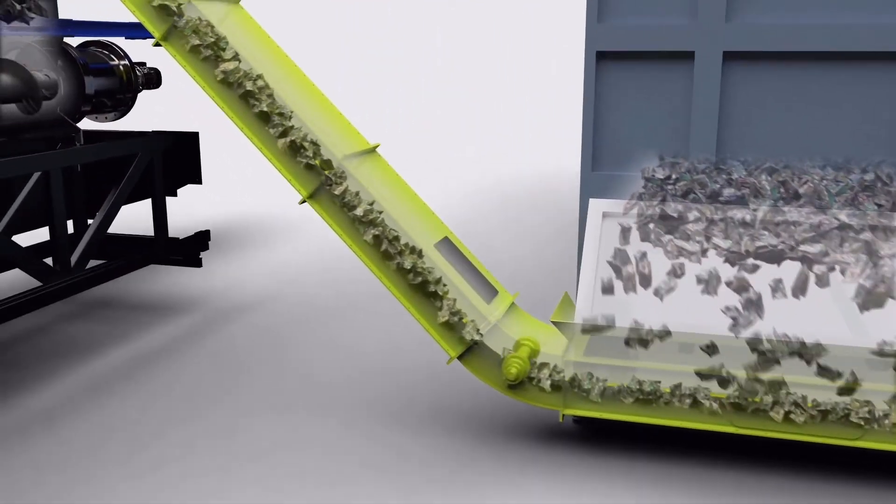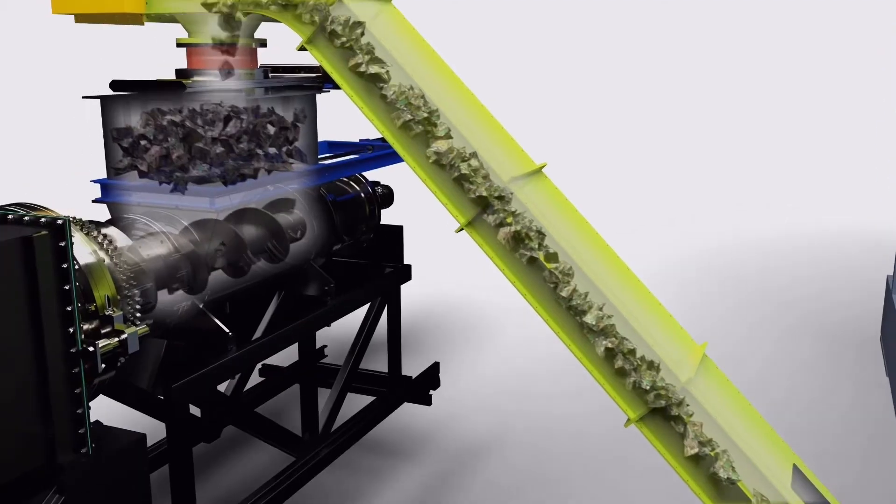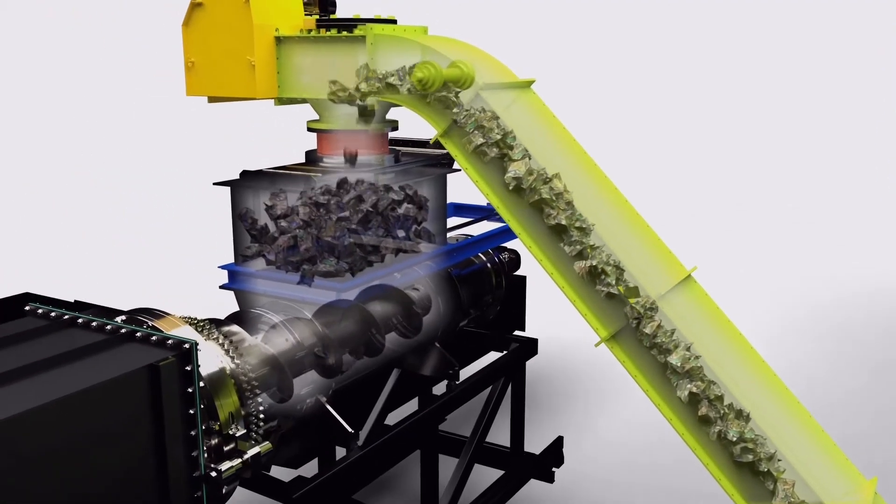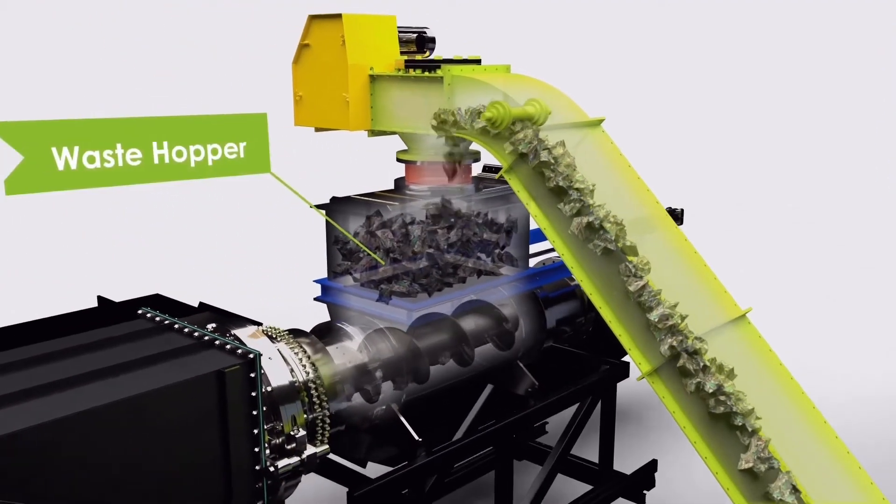In this example, waste enters the unit after being shredded. It then drops through into the hopper, which deposits the right amount of waste into the pyrolysis unit.